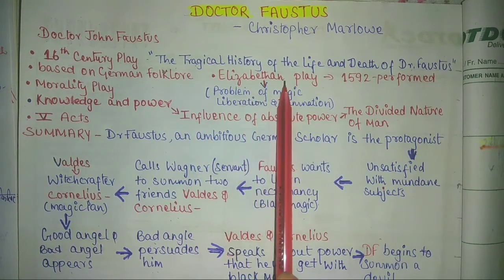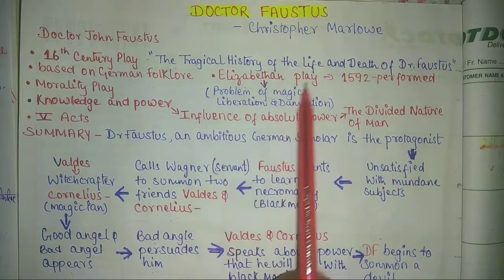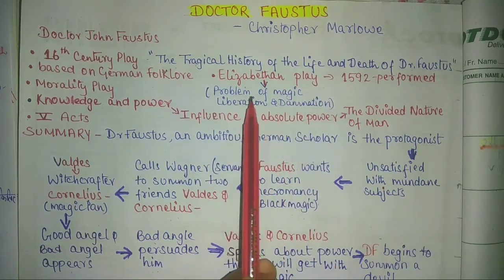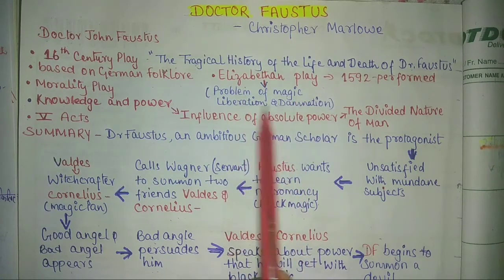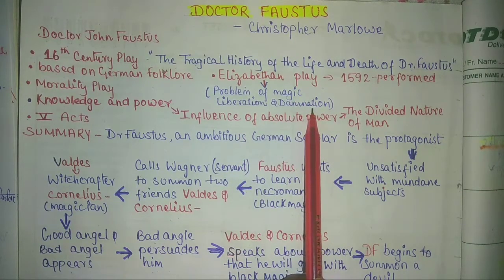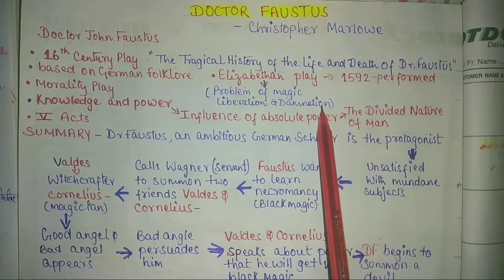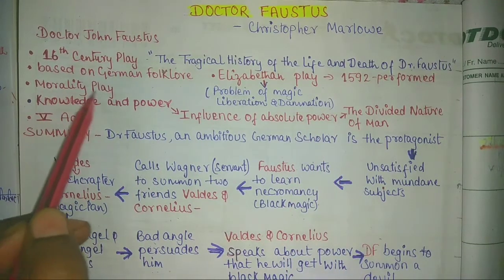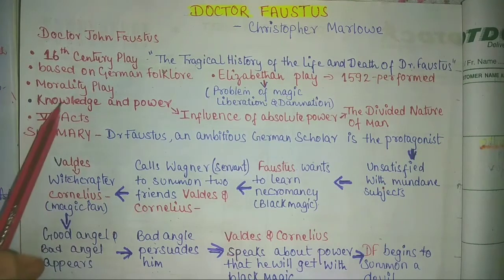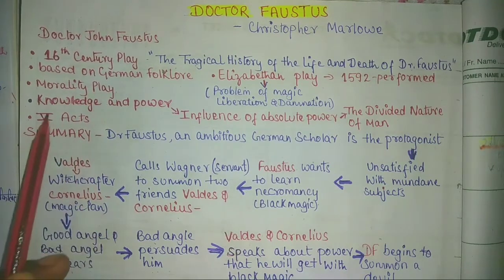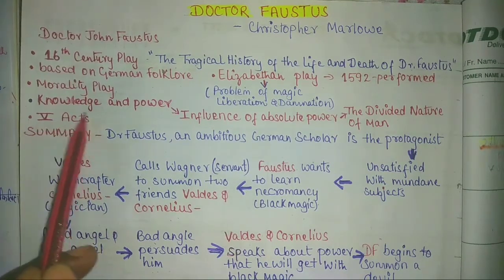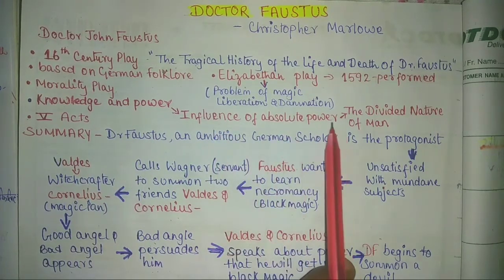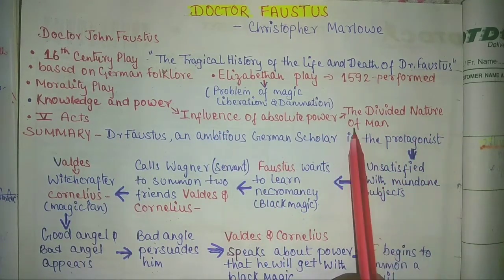It is an Elizabethan play because during this period the problems of magic, liberation, and damnation were discussed in the country. It belongs to the morality play genre and the themes are: knowledge and power, the influence of absolute power, and the divided nature of man.